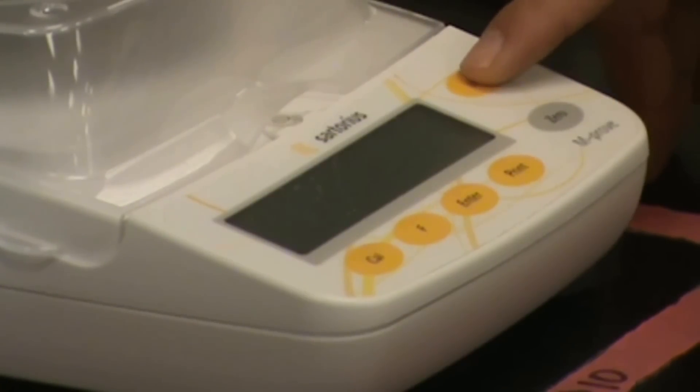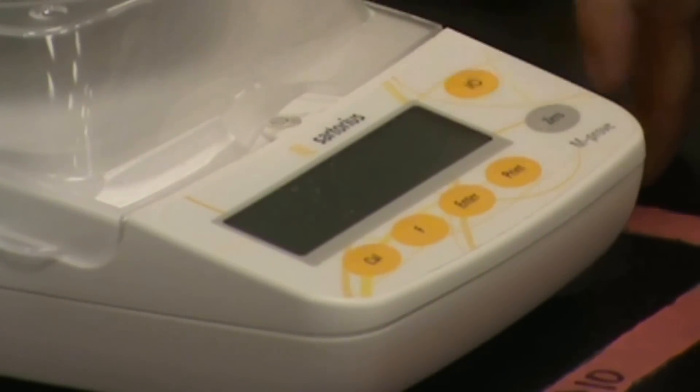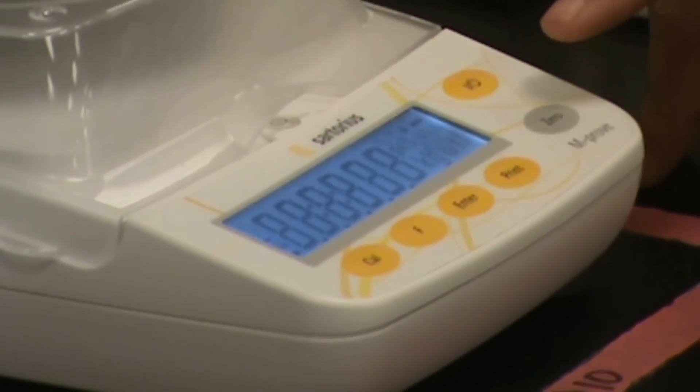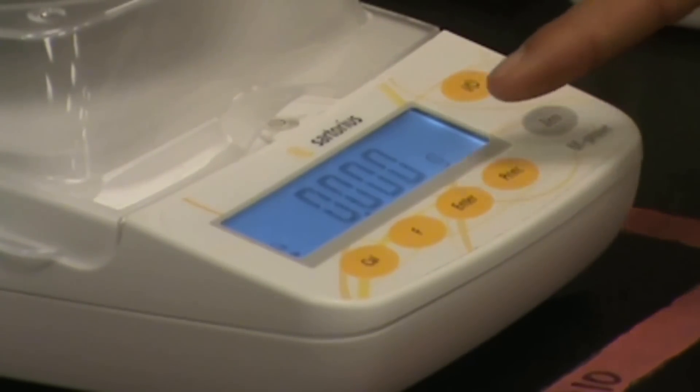I'm going to hit the power button now in order to turn on the instrument. And you'll notice the boot up screen. After a few moments, zero gram should appear. And at this point, you want to double check that your units are indeed displayed in grams, indicated by the G right here.